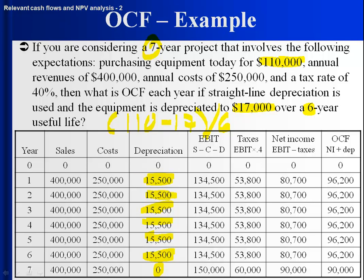If it were a 5-year project, we'd have depreciation of $15,500 over the first 5 years, with unused depreciation incorporated later when the equipment is sold. Now we want net income, which is EBIT minus taxes. Taxes are 40% of EBIT, and EBIT equals sales minus cost minus depreciation. Nothing happens in year 0. Years 1 through 6 have sales of $400,000, costs of $250,000, and depreciation of $15,500, giving taxable income of $134,500. Taxes are $53,800, leaving net income of $80,700.